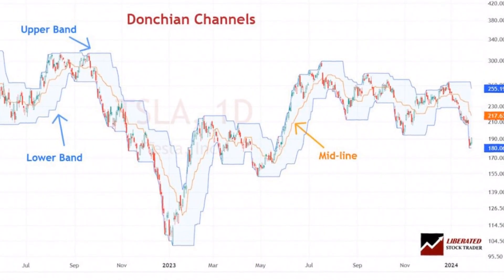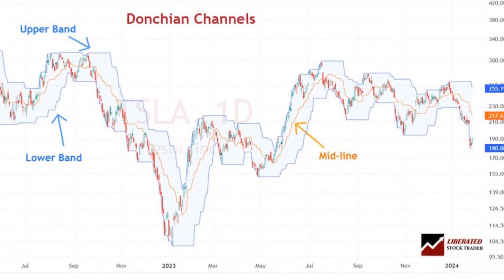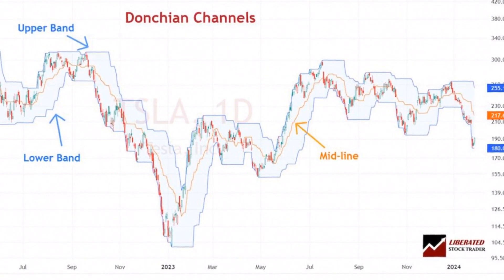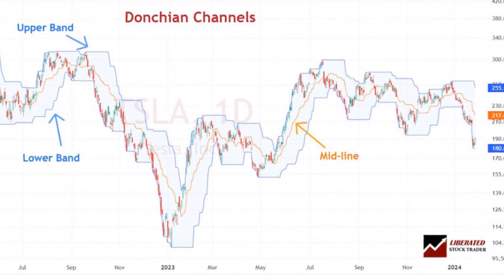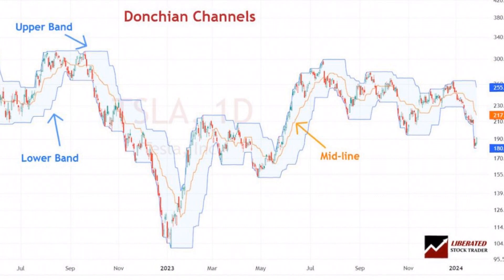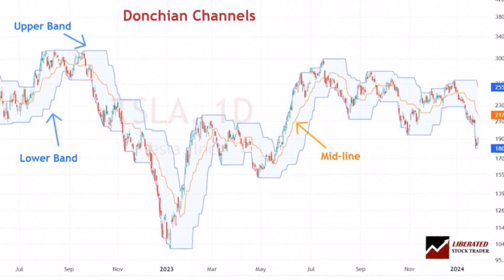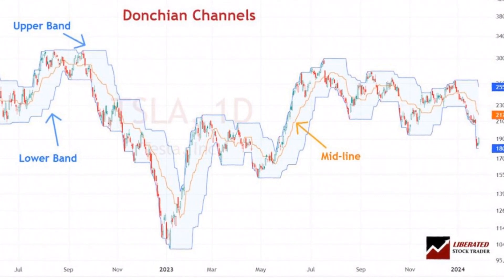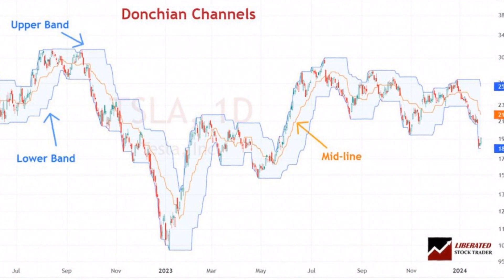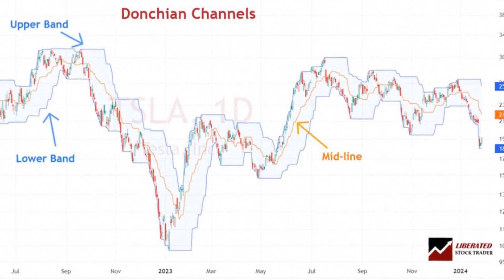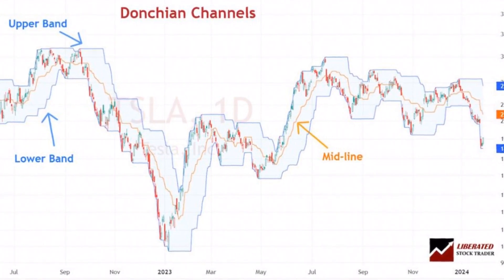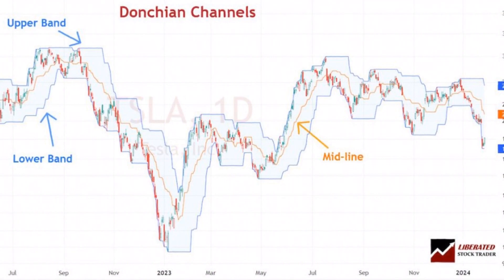To properly use the Donchian Channel indicator, understanding key parameters is crucial. The upper band represents the highest price reached in the past N periods, while the lower band depicts the lowest price reached during the same N periods. Typically, a 20-period setting is used for optimal results.